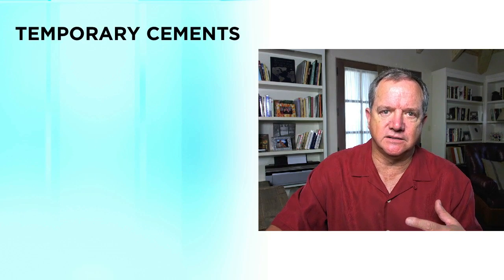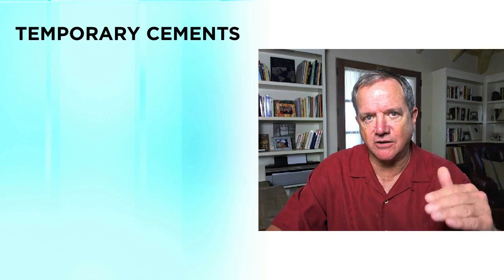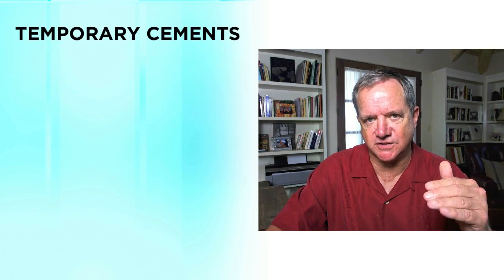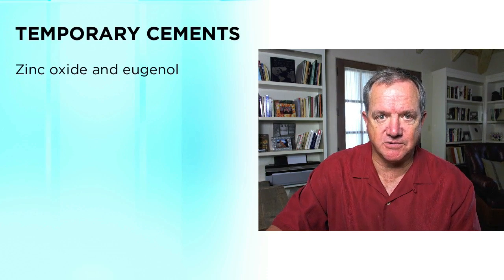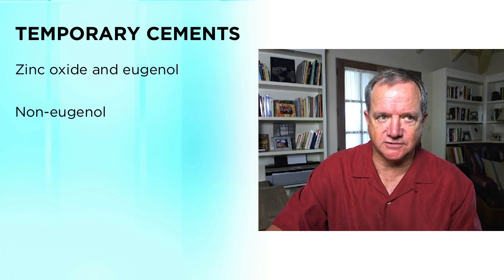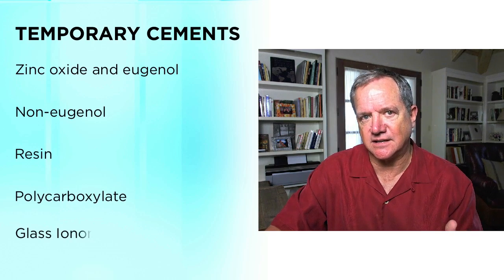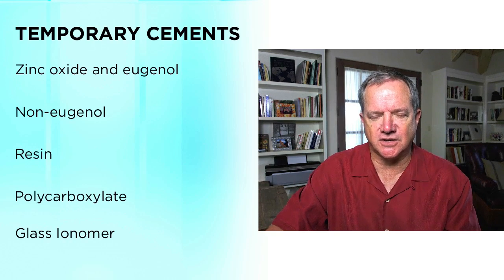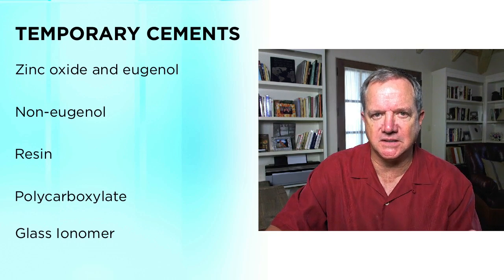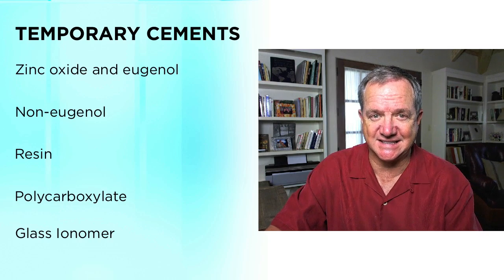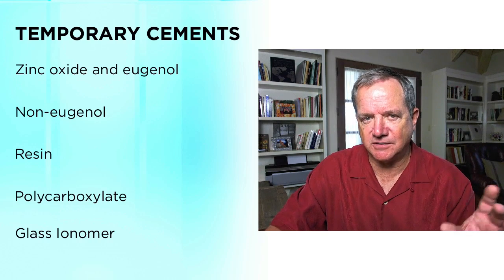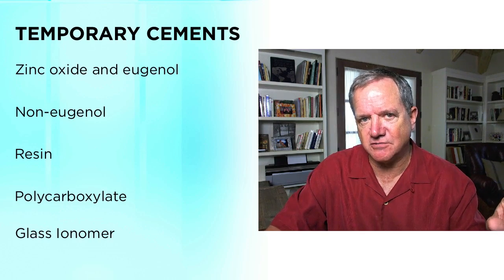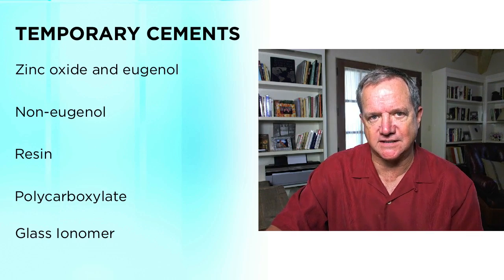When I look at the categories — if you really were to narrow down temporary cements — you kind of have ZOE, non-eugenol, resin, polycarboxylate, and glass ionomer. I'm going to leave out polycarboxylate and glass ionomer. I know some people love them, but to me they're too hard to clean off the tooth because they like to stick to the tooth. So in my world, I live with ZOE, non-eugenol, or resin cements.